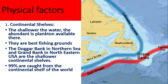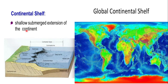The Dogger Bank in the Northern Sea and the Grand Bank in the north-eastern USA are shallower continental shelves. Almost 99% of fish are caught from the continental shelf — the extension of the continent. You can see the continental shelf of the continent on the map.